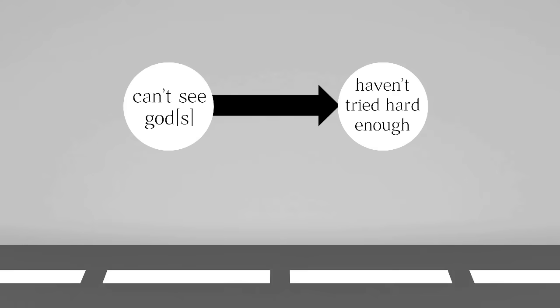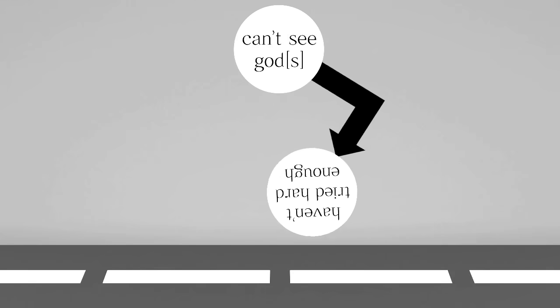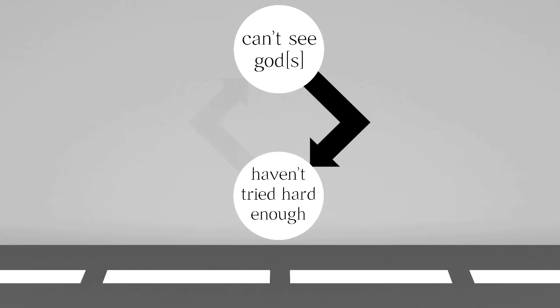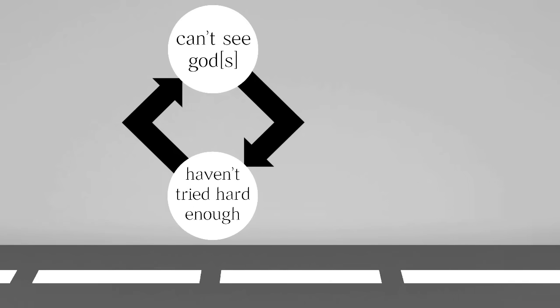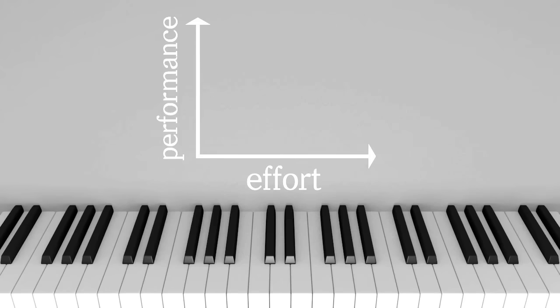I can't count the times it's been put to me that I can't see gods because I haven't tried hard enough. Obviously not something you'd say to a color blind person. The circular nature of this argument is exposed when I ask what proof there is for it. I'm told the proof I haven't tried hard enough is that I can't see gods. This kind of circle does have a ring of validity in certain circumstances. Playing Chopin requires sustained effort. Practice generates incremental improvements in accuracy, speed, emotional expression.